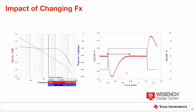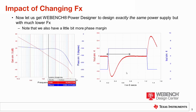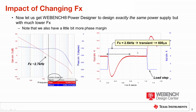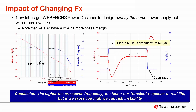If I go back to Webbench and re-simulate and redesign my power supply for a lower crossover frequency, I can see how this changes the transient performance in the time domain. It's exactly the same power supply — all I have done is changed the crossover frequency from 16 kHz to around 2.7 kHz. From theory, because the frequency is lower, I expect the transient response to be slower. And indeed, with 2.7 kHz of crossover and exactly the same load step going from just above zero to around 6 amps, I now get a transient response of 600 microseconds, which is significantly slower. So the conclusion is that the higher the crossover frequency, the faster the transient response in real life.